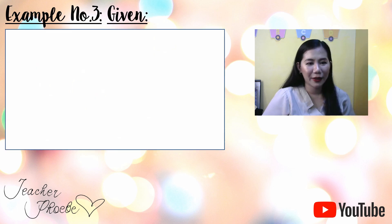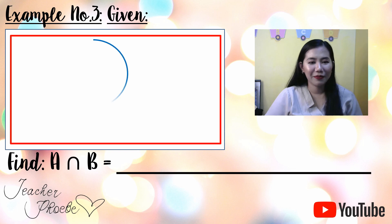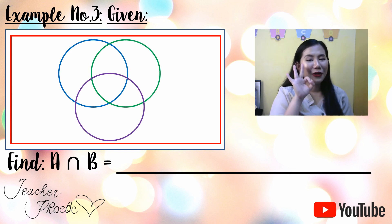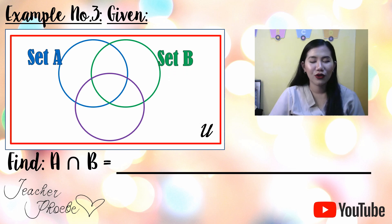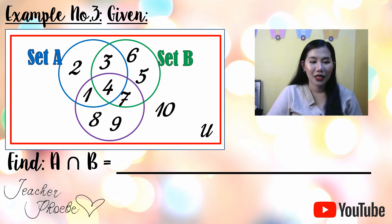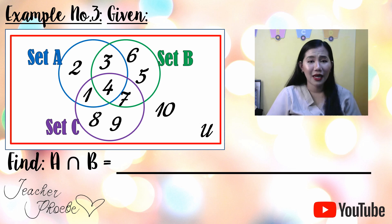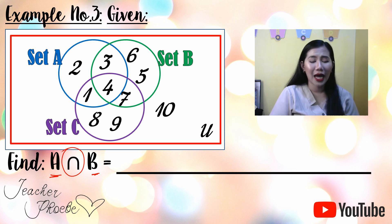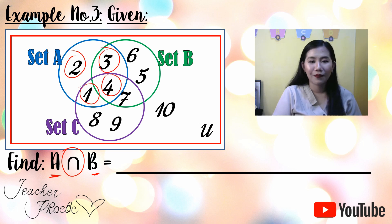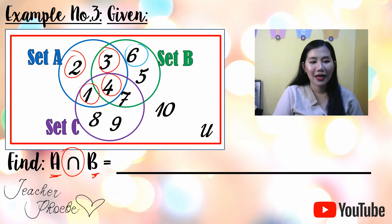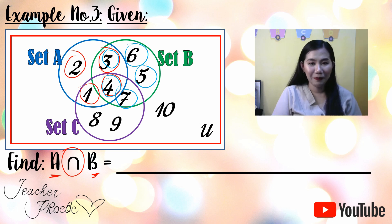Let's have Example Number Three. Find the intersection of A and B given three sets shown in a Venn diagram. Set A is the blue circle, Set B is the green circle, and Set C is the violet circle. The elements of Set A are 2, 3, 4, and 1. The elements of Set B are 6, 5, 7, 4, and 3.